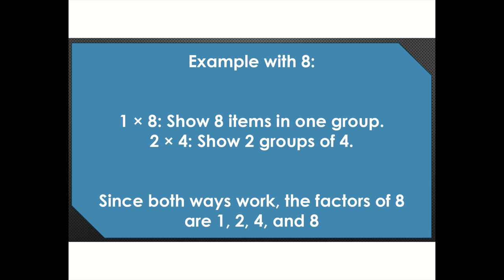Example with 8: 1 times 8 - show 8 items in 1 group. 2 times 4 - show 2 groups of 4. Since both ways work, the factors of 8 are 1, 2, 4, and 8.